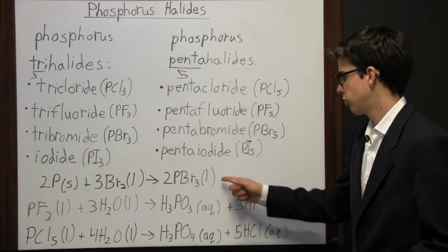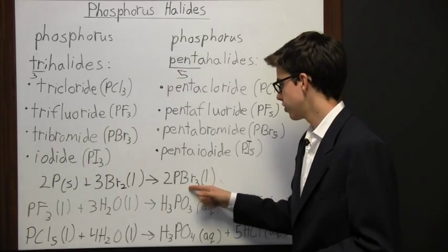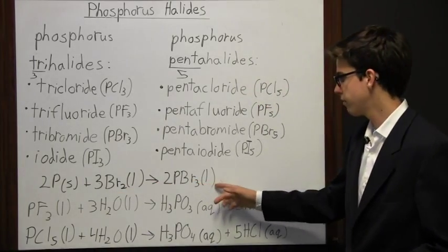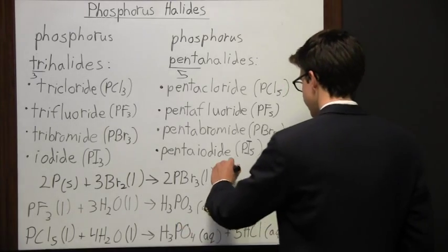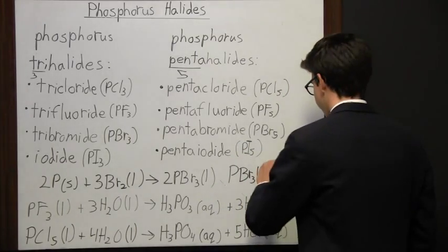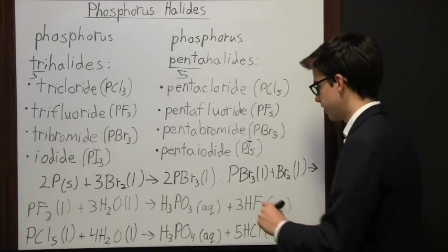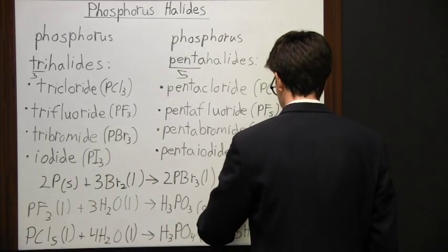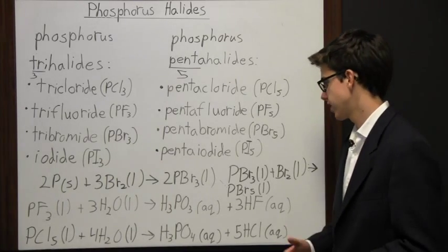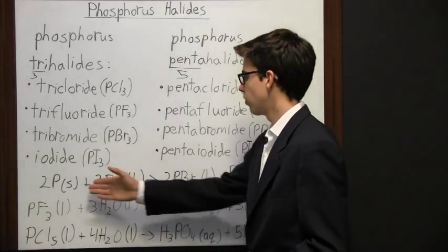One last note about how to make a phosphorus halide. If excess bromine is present, say we have this right here, we can react that with bromine to get something bigger. We're going to take that and add it to a halogen, like two atoms of bromine, and what we're going to get is phosphorus pentabromide (PBr5). That's just in the case that you have excess bromine. Then you're adding that with more bromine to get a different compound. But in general, this is the only equation you would need.